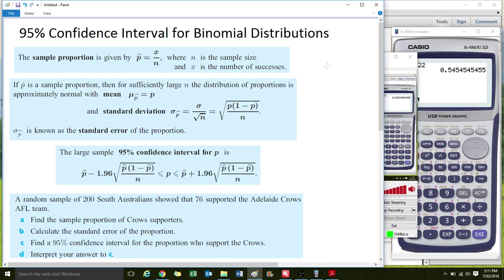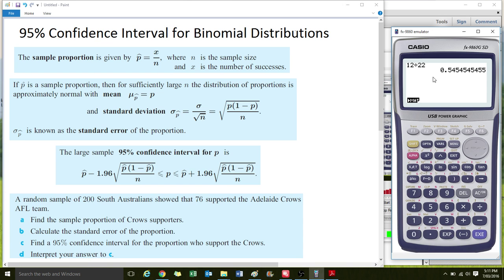But first I want to just show you the three things that we need to know. First is the sample proportion, which is basically the number of successes divided by the sample size. So over here I've done this calculation on the calculator. Let's say that 12 people out of 22 had brown hair, so you could say a proportion of 0.545.